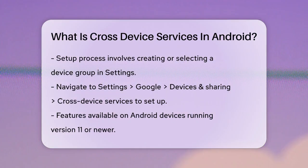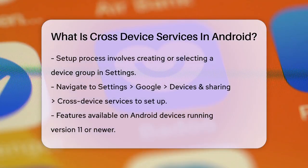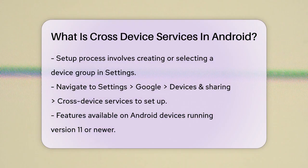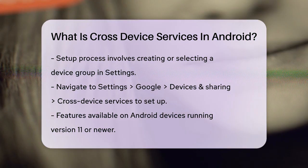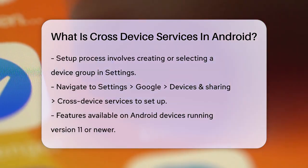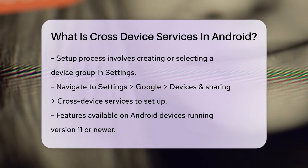To use these features, you need to set up a device group. Here's how: go to your Android device's settings, then tap on Google, followed by Devices and Sharing, and finally Cross-Device Services. You'll need to create or select a device group and enable the features you want to use. Make sure Bluetooth is turned on for internet sharing to work.